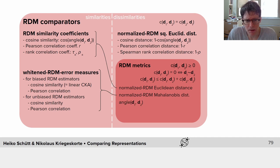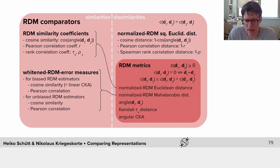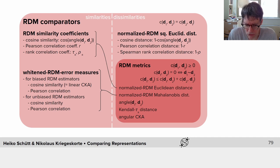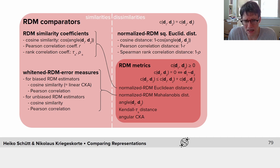There are also a couple of other options. Instead of the cosine similarity — the cosine of the angle between the two RDMs — we can take the angle itself, which is also an RDM metric. Or we can take the Kendall tau A rank correlation distance, which is also a metric. Or we can take the angular CKA, a particular metric introduced by Alex Williams. This serves as a roadmap giving a sense of the relationships between important and frequently used similarities and dissimilarities, and showing that most of them have metric variants — so if a metric is desirable, you can convert your preferred measure into one.